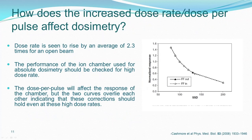How does the increased dose rate or dose per pulse affect dosimetry? Dose rate rises by about 2.3 times for an open beam in Triple F compared to Double F. The performance of the ion chamber at such a high dose rate has to be checked. Significant information is given in the paper by Cashmore et al. in Physics in Medicine and Biology, 2008, where they studied dose per pulse effects. They found that the variation between Double F and Triple F is not significant, but it is good practice to check for your own chamber.